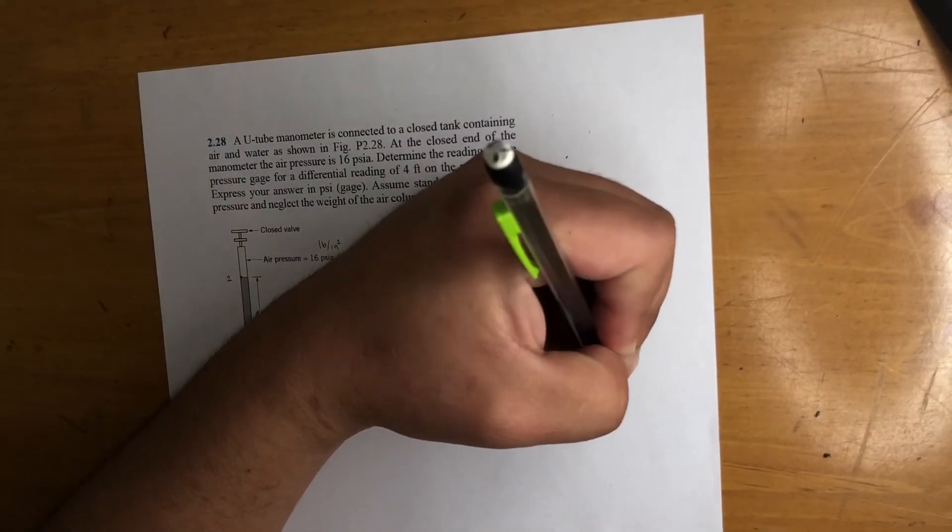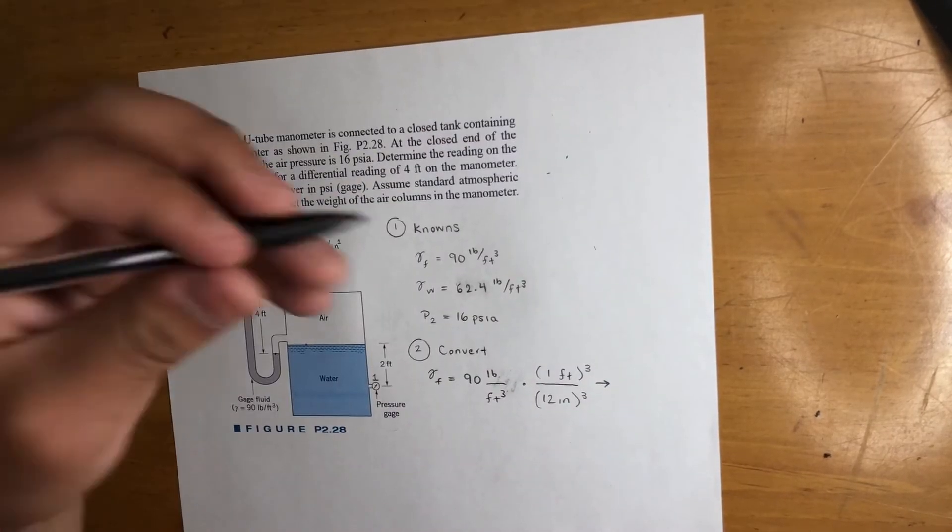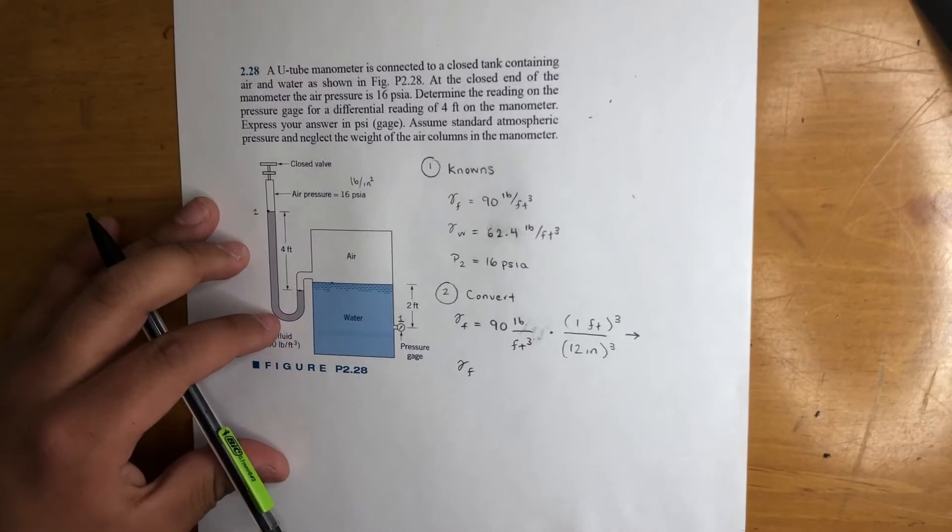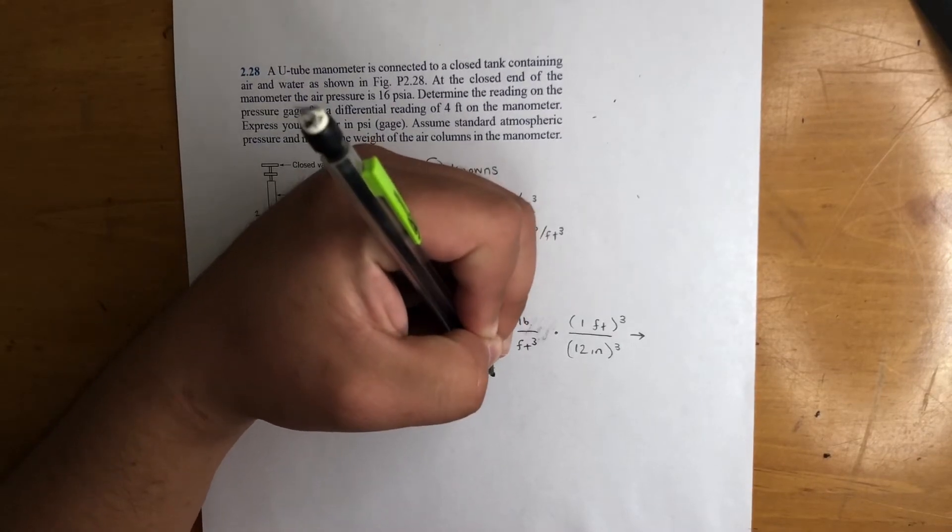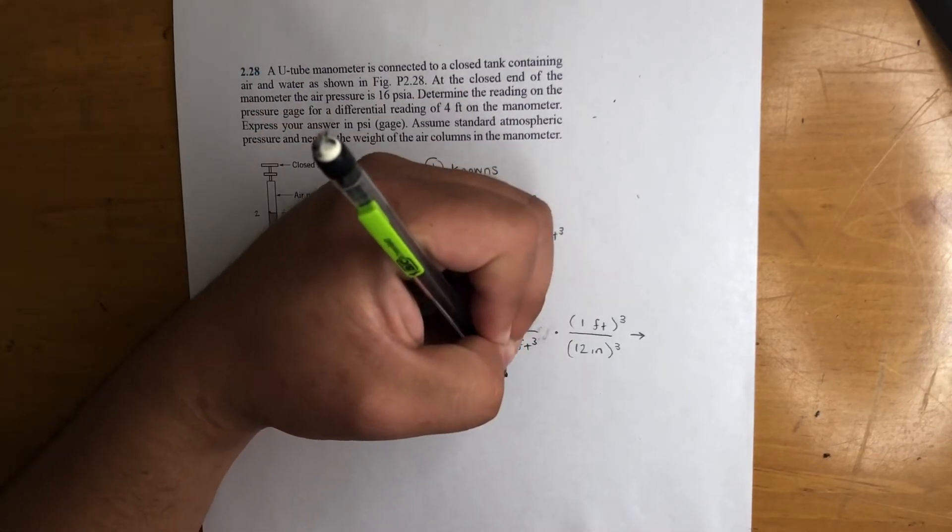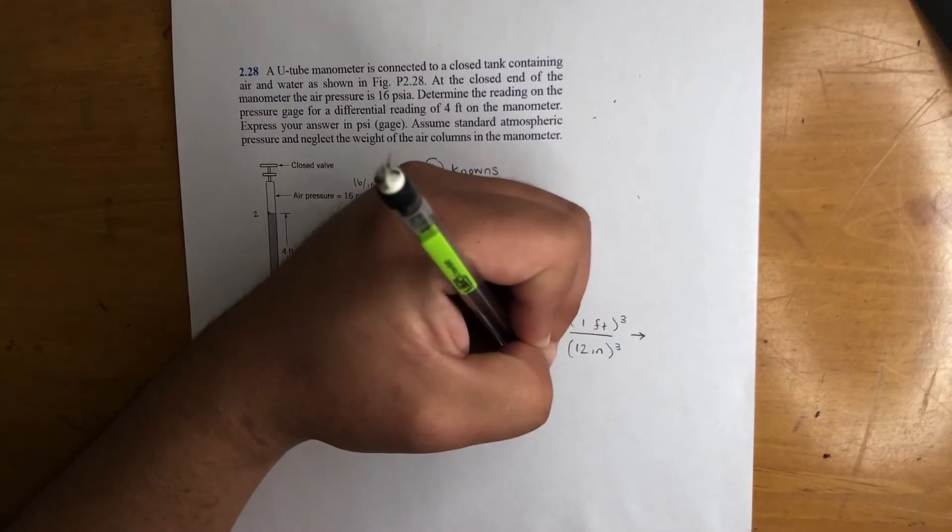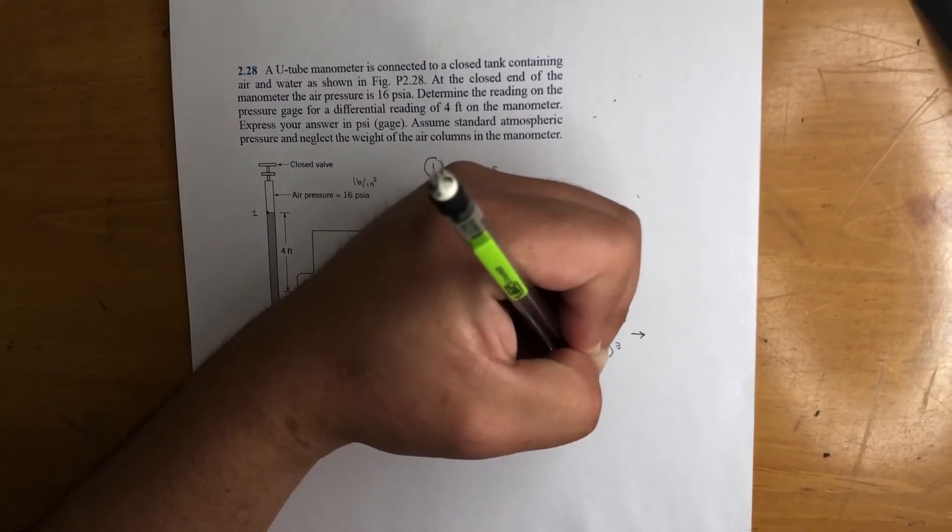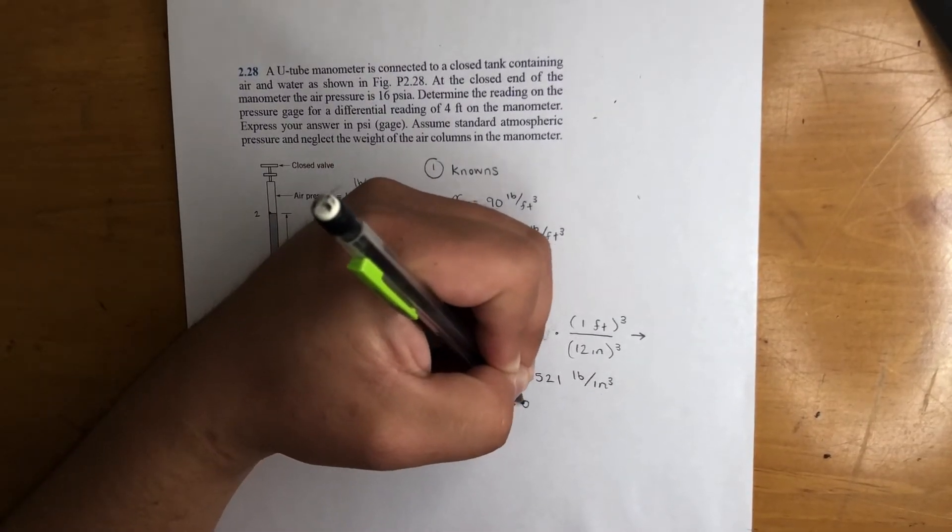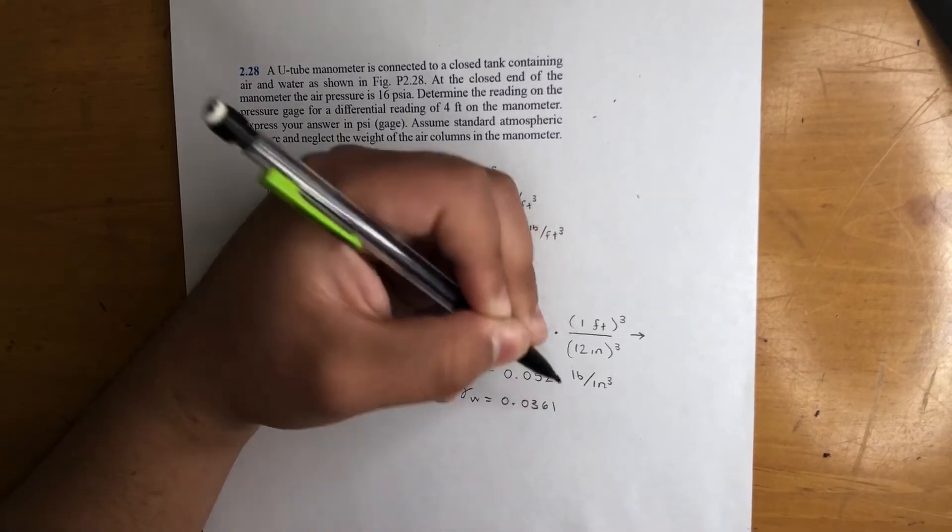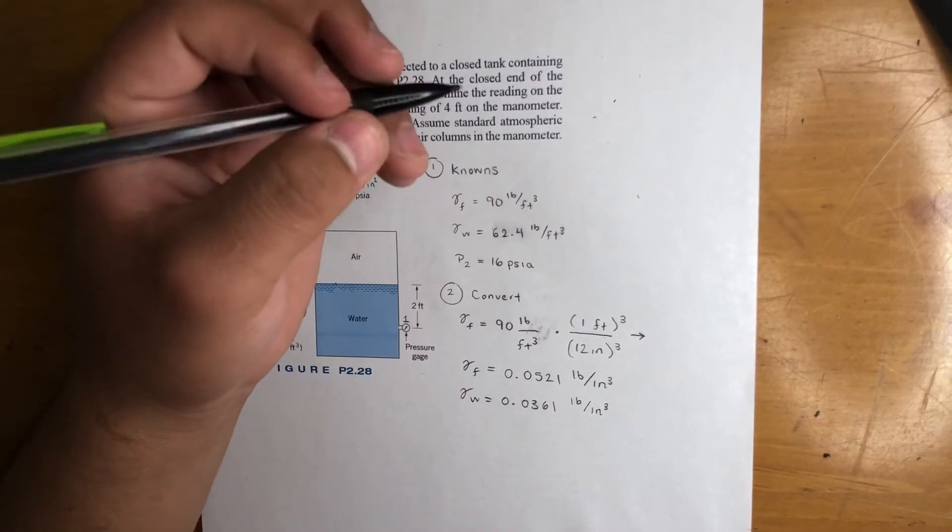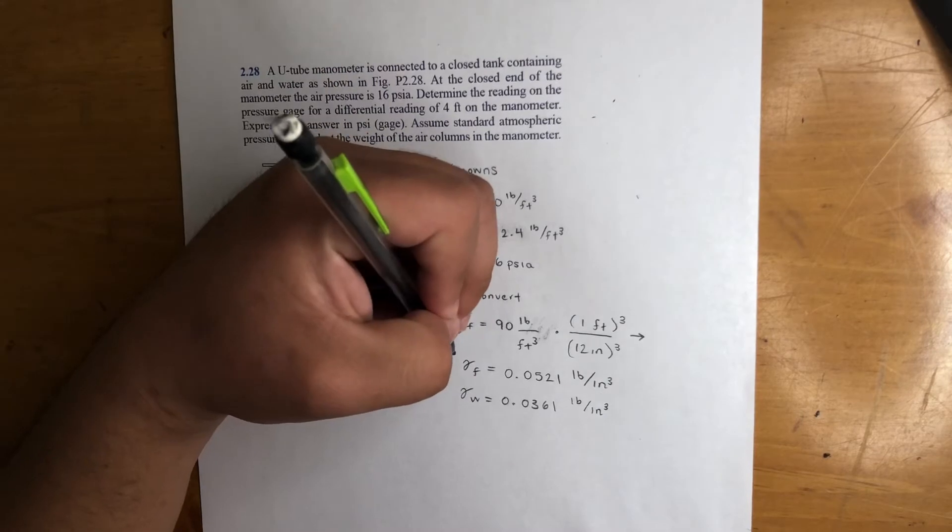And that's gonna give us gamma f. Let me put it right here so you can see. Gamma f is equal to 90 divided by 12 three times, right? Just 90 over 12 over 12 over 12. That will give you 0.0521 pounds per cubic inch. Do the same thing with water, you'll get 0.0361 pounds per cubic inch. And let me—yeah, so we're pretty much good on this piece right here.